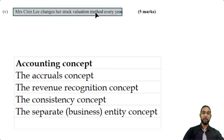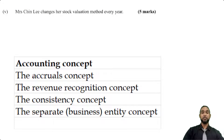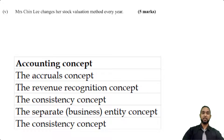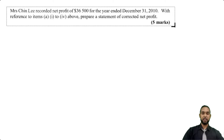Item five: Mrs. Chinlee changes her stock valuation method every year. Again, you're not supposed to change methods every year unless there's a good reason to, so you are violating the consistency concept.